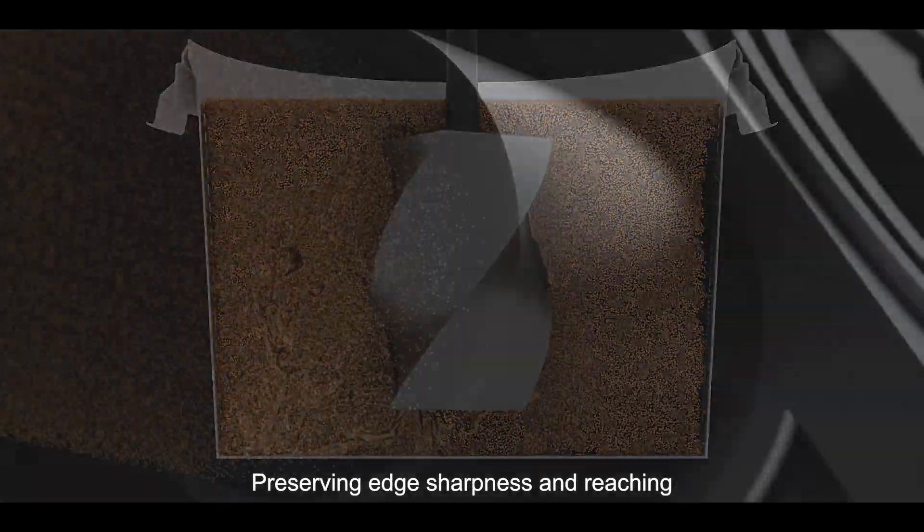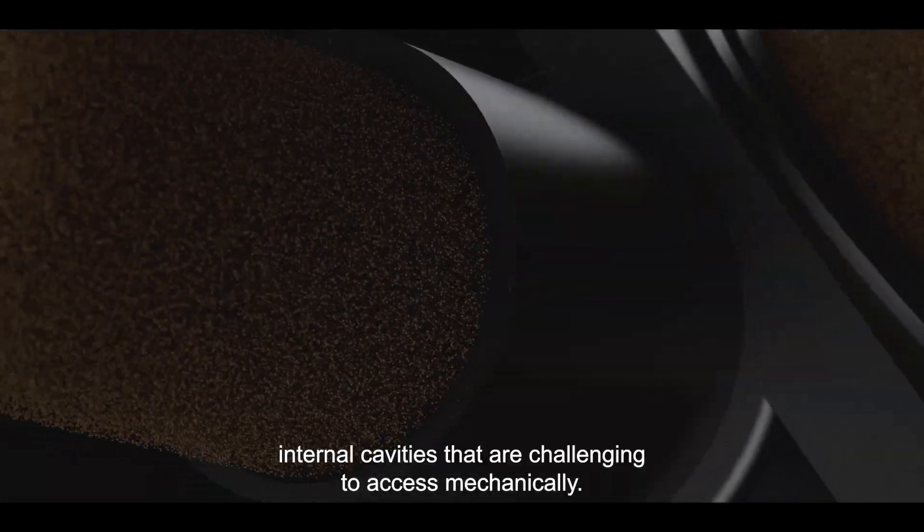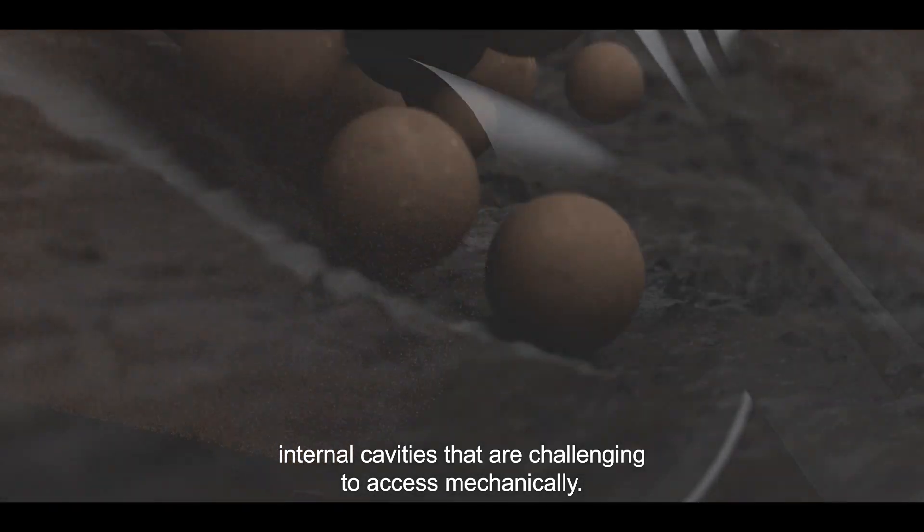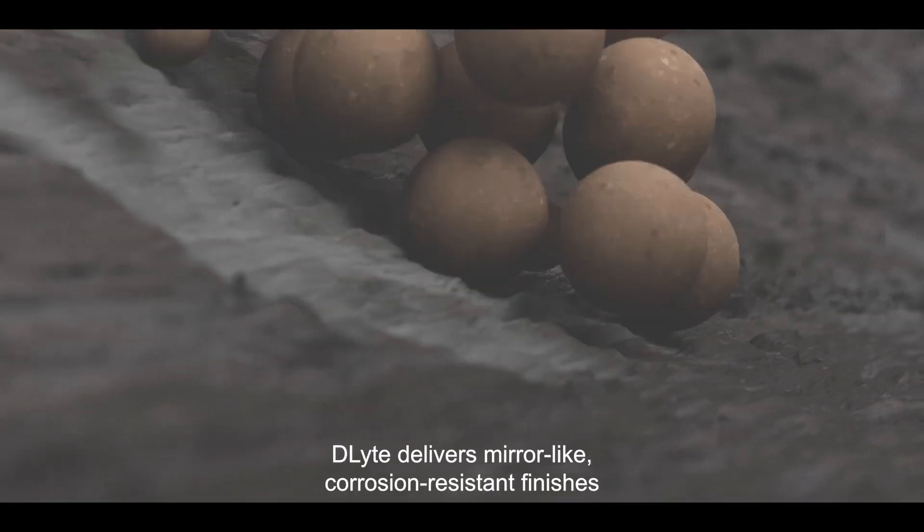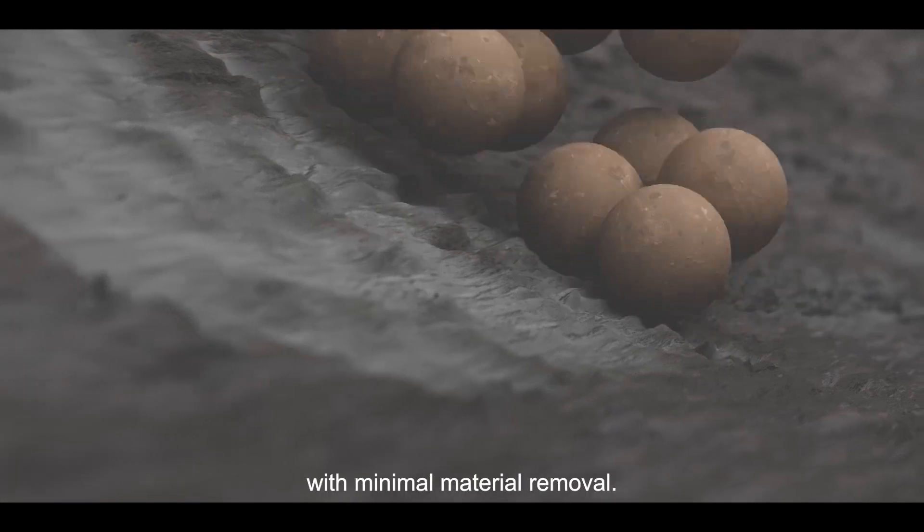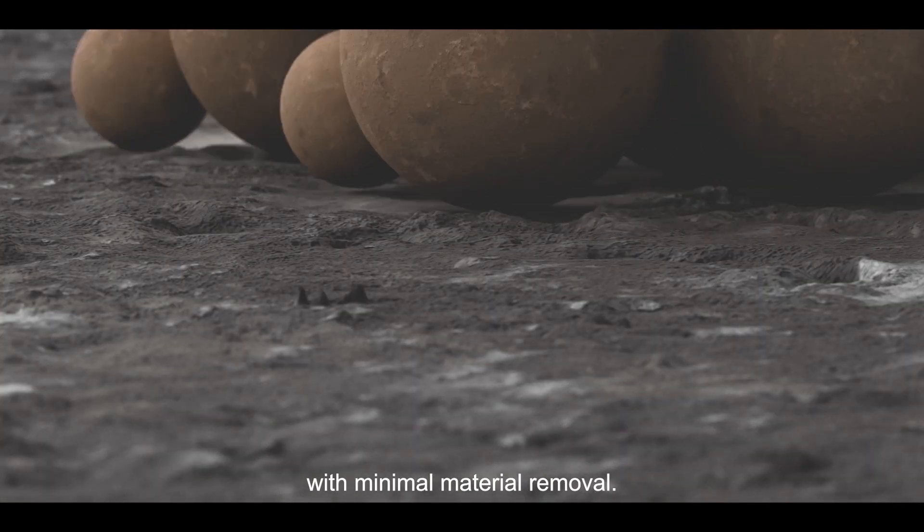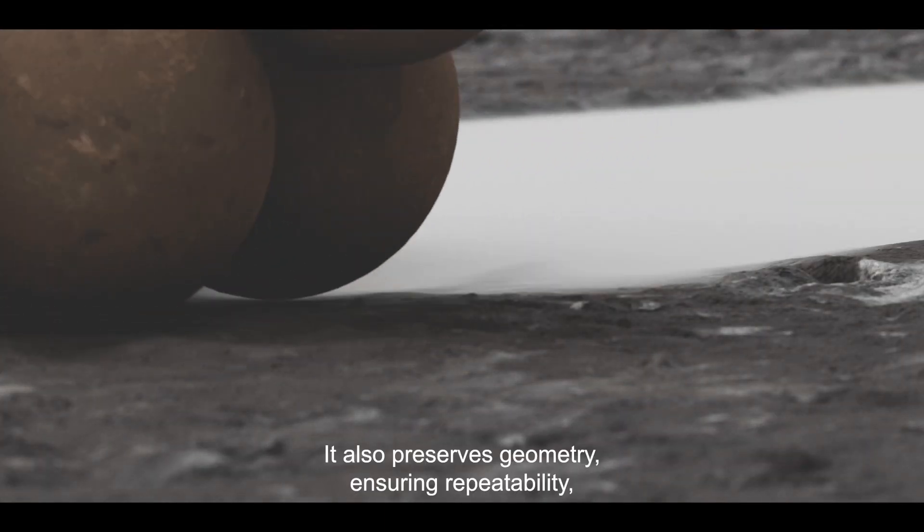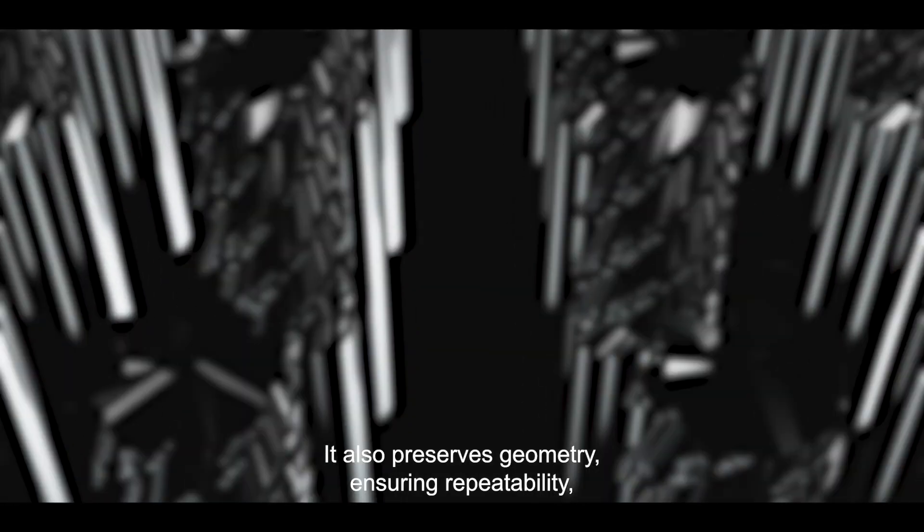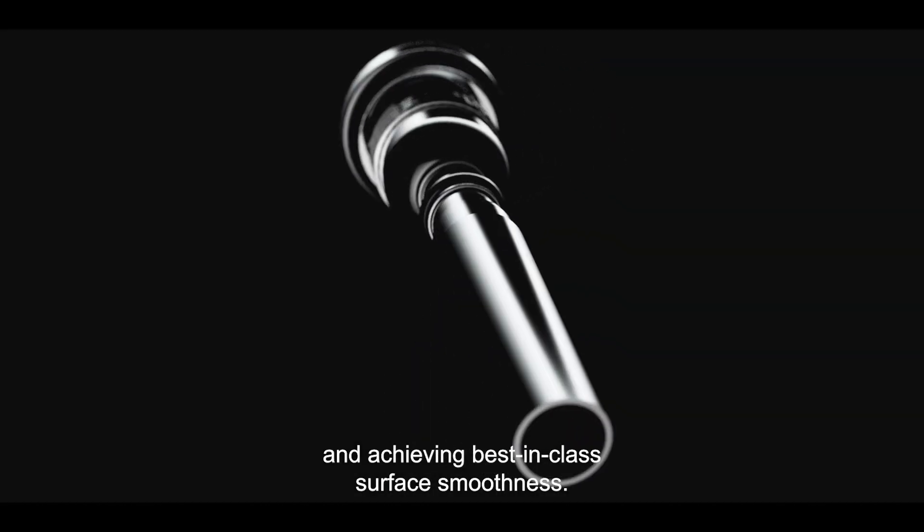Preserving edge sharpness and reaching internal cavities that are challenging to access mechanically, D-Lite delivers mirror-like corrosion resistant finishes with minimal material removal. It also preserves geometry, ensuring repeatability and achieving best-in-class surface smoothness.